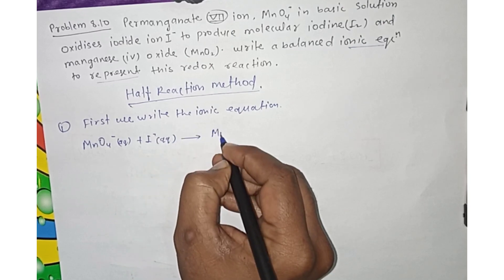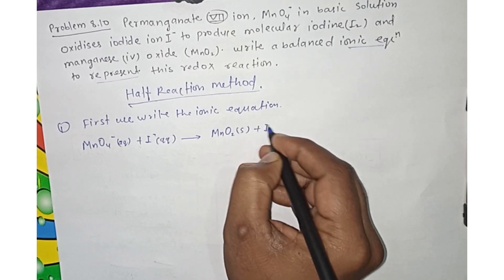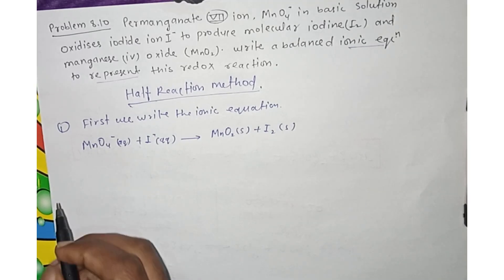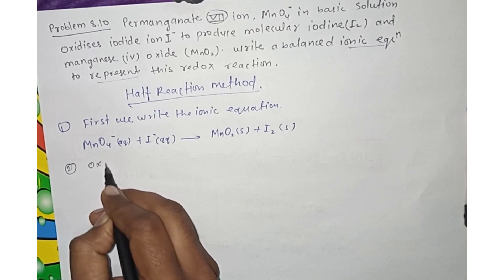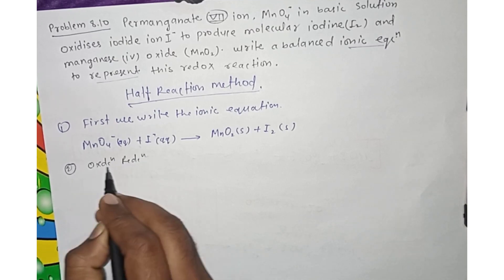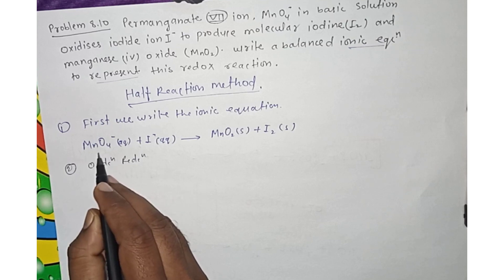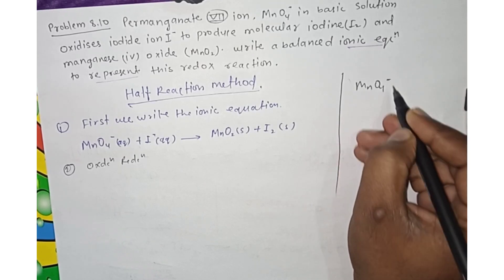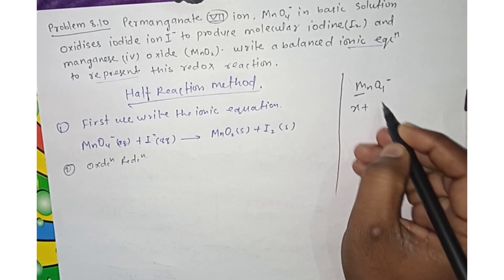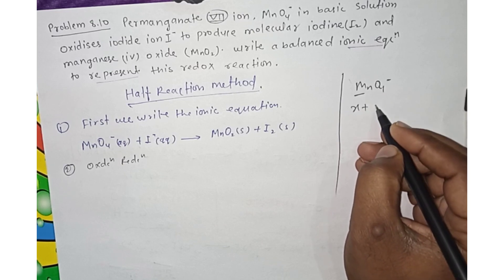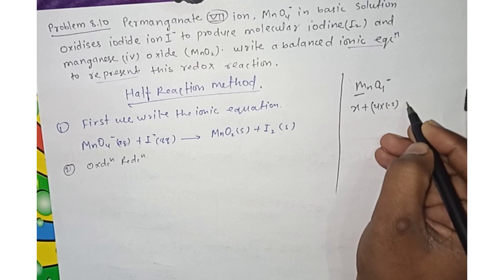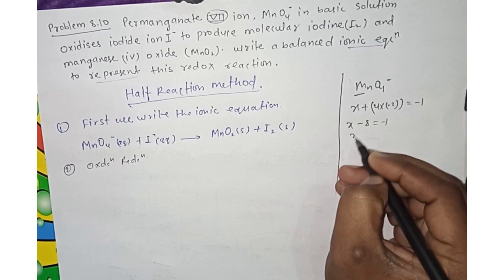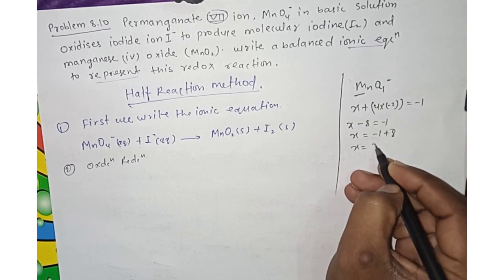The products are MnO2 solid plus I2 solid. Second step: assign oxidation states to identify the oxidizing and reducing agents. For MnO4⁻: Mn plus oxygen, where oxygen is minus 2, times 4. So Mn plus (minus 8) equals minus 1, which gives x equals plus 7 for Mn.